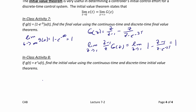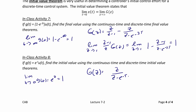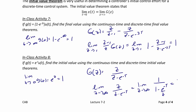In-class activity eight: if G of t equals E to the negative 3T times U of t, find the initial value using continuous time and discrete time initial value theorems. The limit as T goes to zero of G of t equals E to the zero, which is one. G of Z equals Z over Z minus E to the negative T. The limit as Z goes to infinity of Z over Z minus E to the negative T can be written as one over one minus E to the negative T over Z, which also equals one.